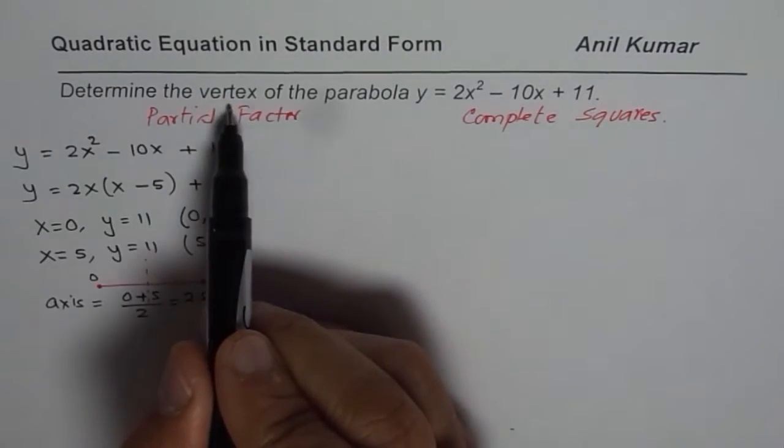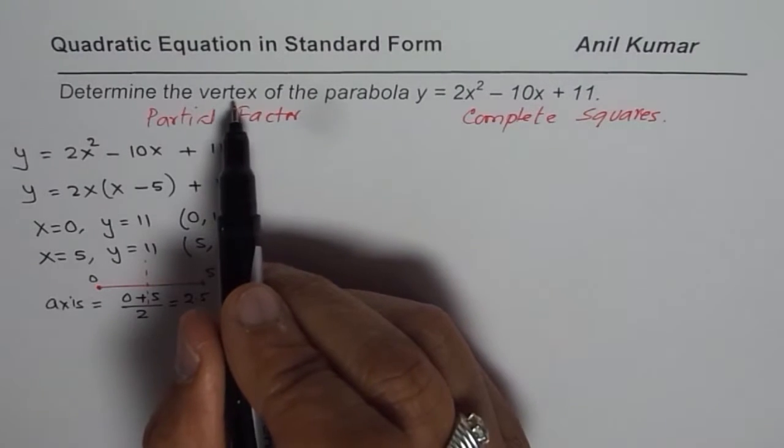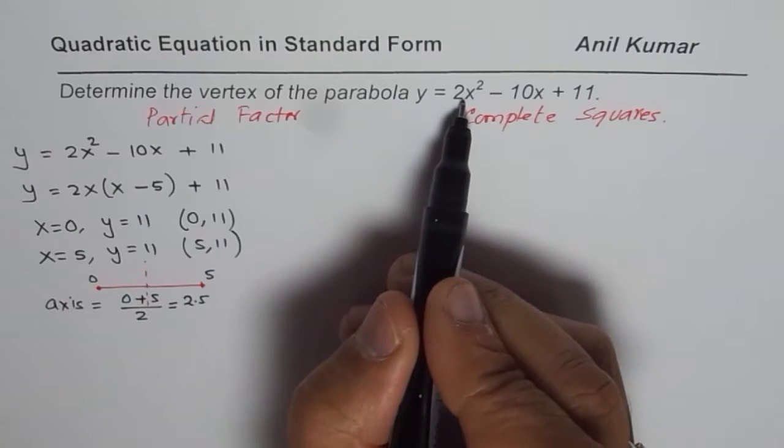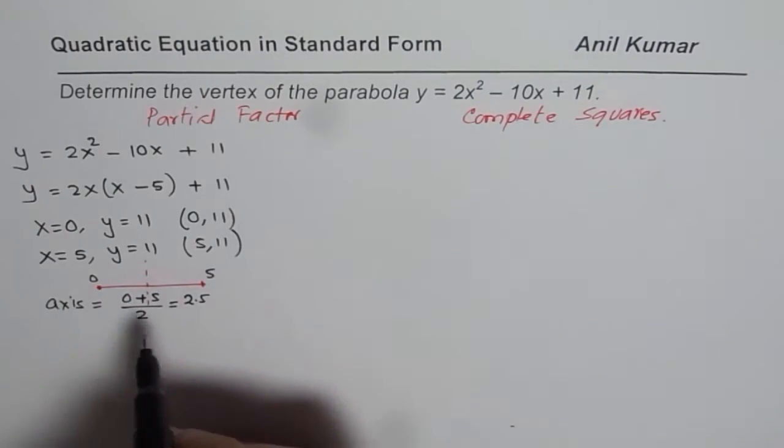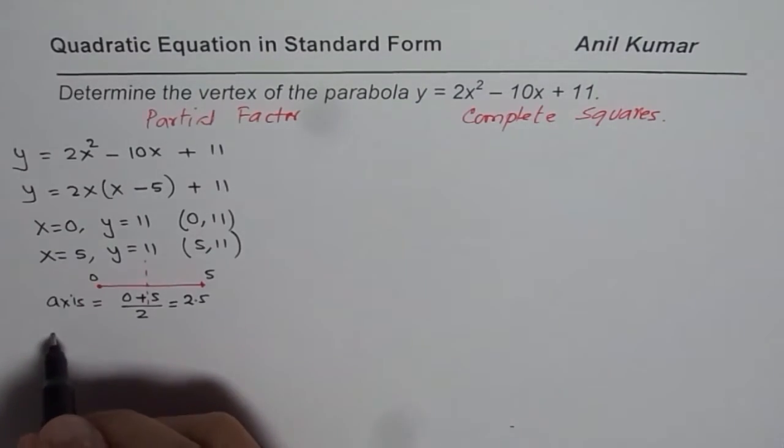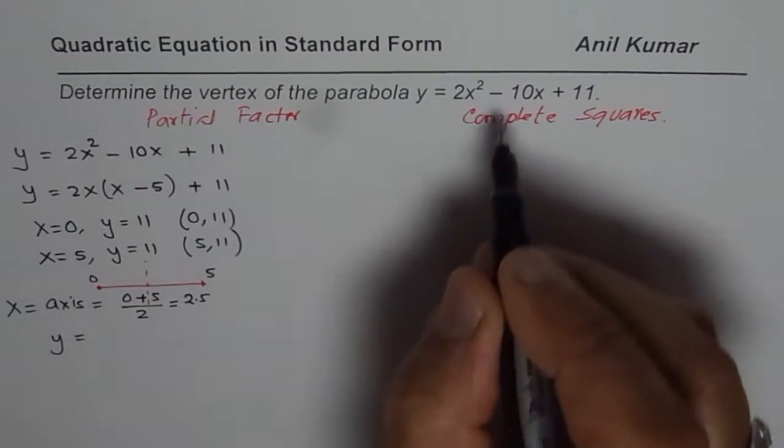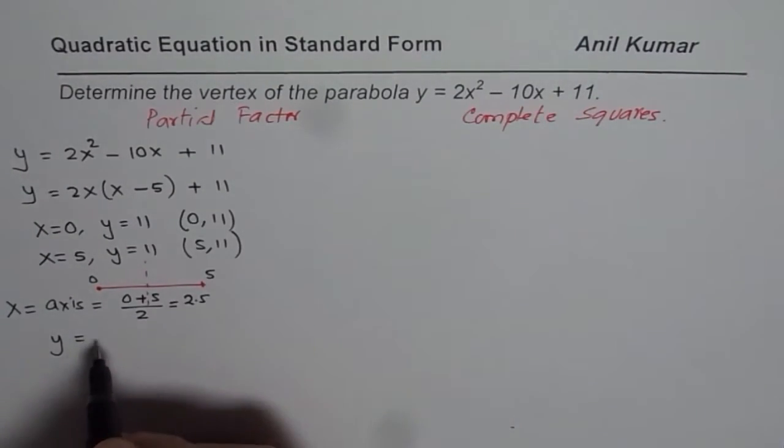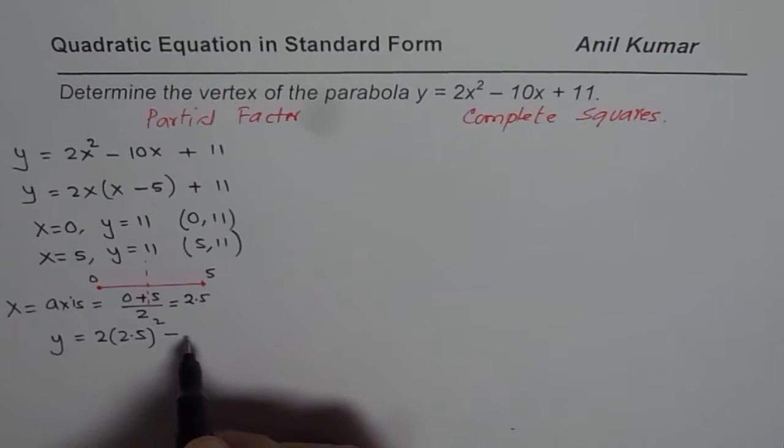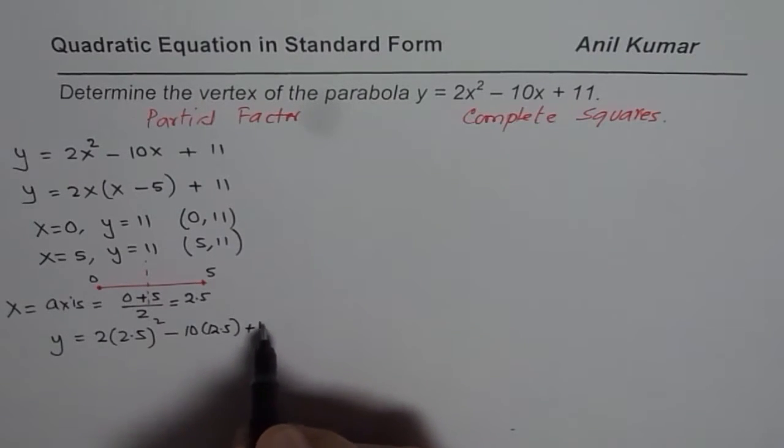Now vertex will always lie on the axis. So to find the value of the vertex, and of course this parabola opens upwards since this value is positive, so let's try to find the minimum value in this case. We'll substitute x equals 2.5 in the equation and find the value of y. So it is 2 times 2.5 whole squared minus 10 times 2.5 plus 11.